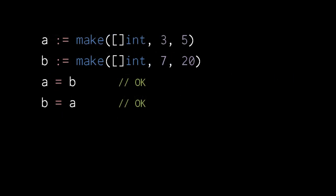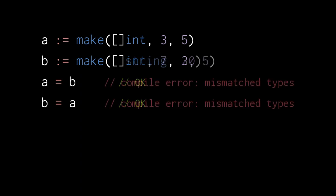Slices with different lengths and capacities are still considered the same type, and so we can assign slice b to slice a, and vice versa. Slices with different underlying types, however, are not considered the same type. This slice of ints is not the same type as a slice of strings, and so we cannot assign one variable to the other.